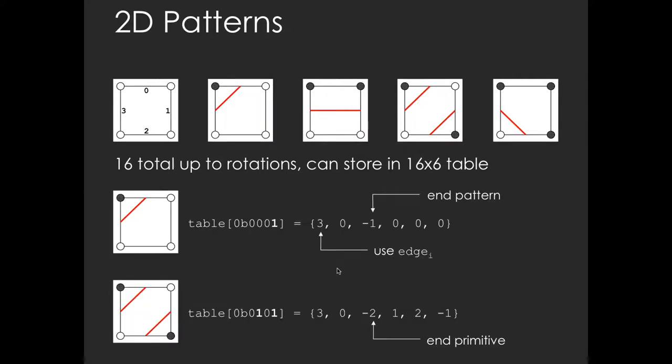Here we show one possible encoding of the patterns in a lookup table. For each pattern, we store the inferred ISO line segments by listing the edges intersected by each segment. We use -1 to terminate the pattern and -2 to indicate a disconnected ISO line fragment. Each row in the lookup table will contain the information for emitting line strips to render the corresponding section of the ISO line. The index of each configuration is obtained from its binary in-out classification of the vertices.